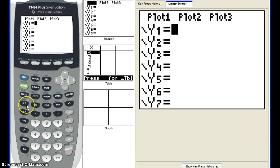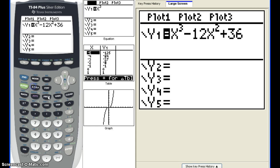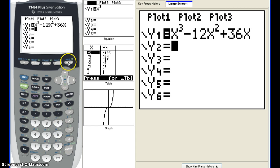So on your calculator, you're going to want to plug in x to the third power minus, make sure you cursor to the right, go minus 12x squared. So you have a squared button. Plus 36x. And we're going to hit the graph button.